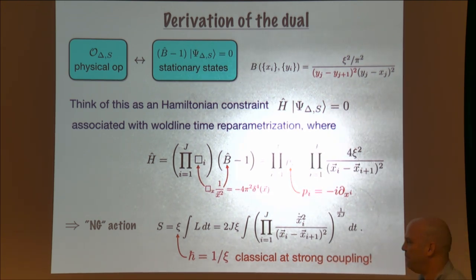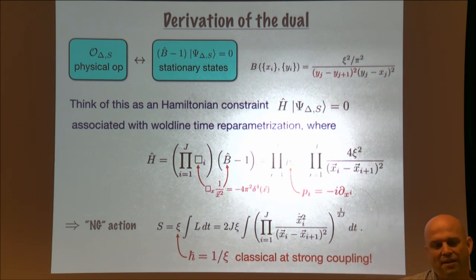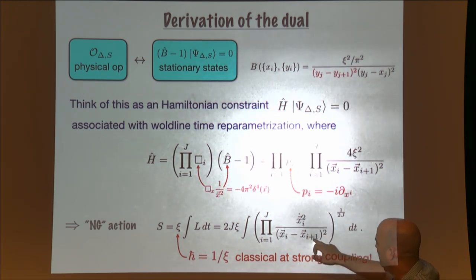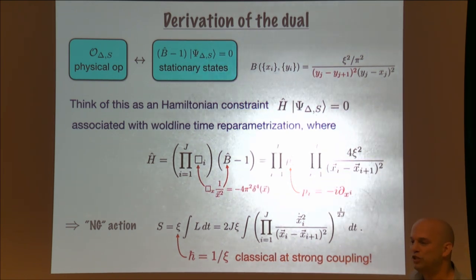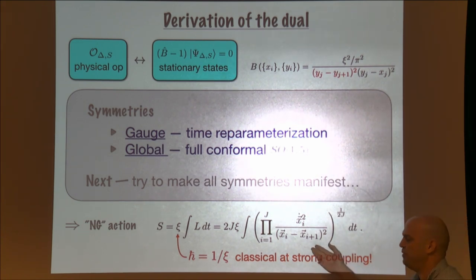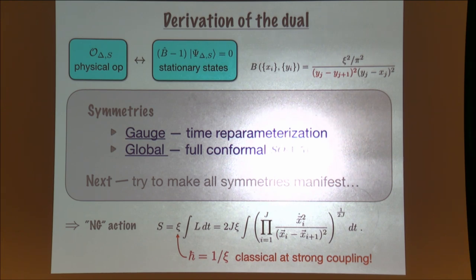First, note about this action: the 't Hooft coupling just stands outside, meaning that whatever dynamics this action describes becomes classical at strong coupling. The action itself is a product of the kinetic term divided by the propagators for all the particles, taken to some power of 1/(2J). This has a lot of symmetry: first, it has gauge symmetry from time reparametrization; and it also has full conformal symmetry — the full conformal group, not just Lorentz. What I want to do next is to make all the symmetries manifest.